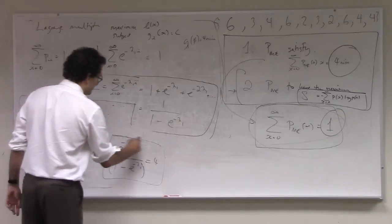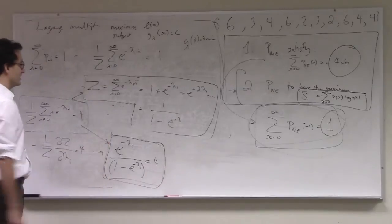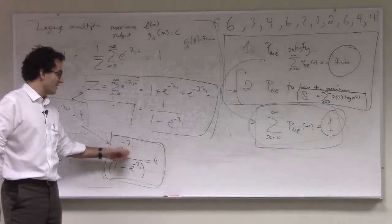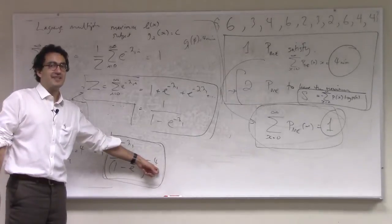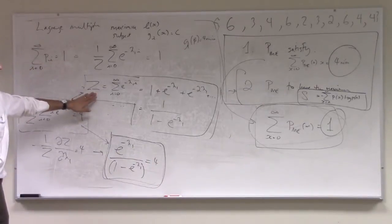So now, all we have to do is solve this equation here, find the value of lambda 1 that sets this term here equal to 4. Once we find that value of lambda 1, we can then plug in to z here.